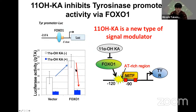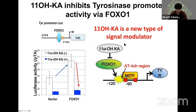We conclude that the MITF binding region together with the FOXO1 binding region is essential for the response to kaolenic acid. We confirmed the involvement of FOXO1 in kaolenic acid-dependent suppression of the tyrosinase promoter: overexpression of FOXO1 upregulates tyrosinase promoter activity, and in the presence of kaolenic acid this upregulation is completely cancelled. So probably MITF upregulates tyrosinase gene expression co-regulated with FOXO1, and 11-hydroxykaolenic acid suppresses FOXO activity, downregulating tyrosinase gene expression. This is one mechanism.